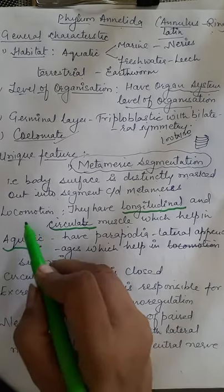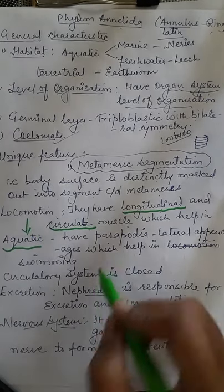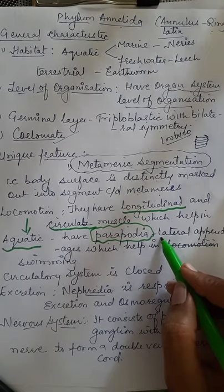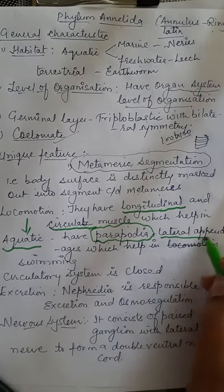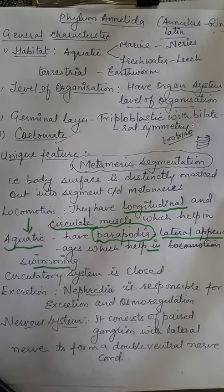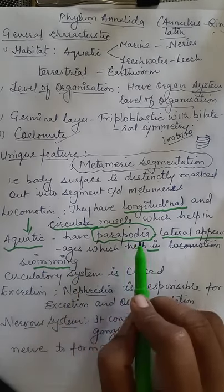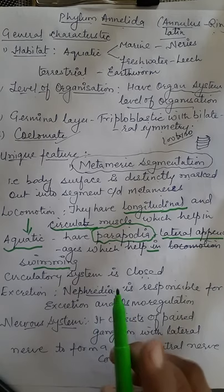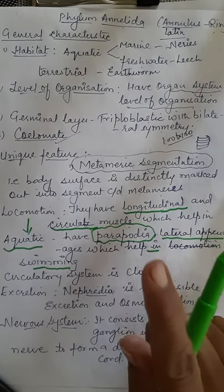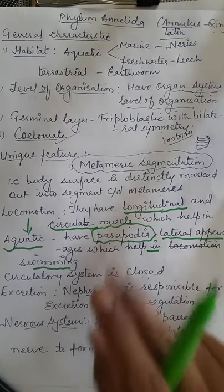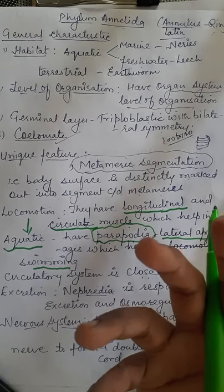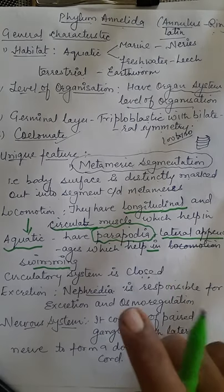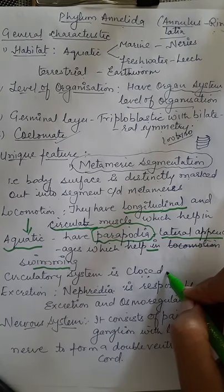For aquatic Annelida, locomotion is aided by parapodia — lateral appendages which help in swimming. Their circulatory system is a closed circulatory system, where blood flows in closed vessels and never comes into open space (unlike an open circulatory system where blood remains in open cavities called sinuses).